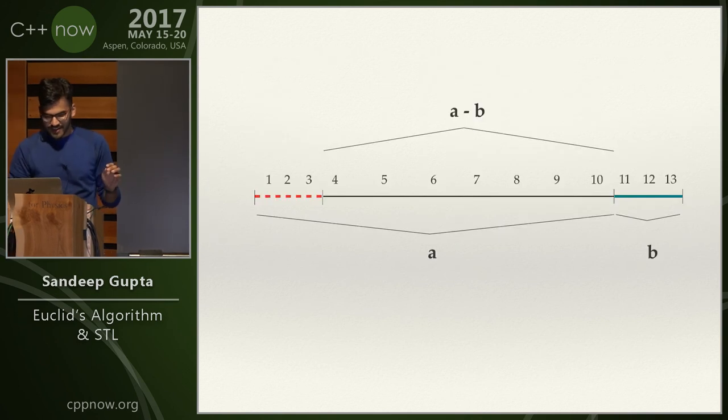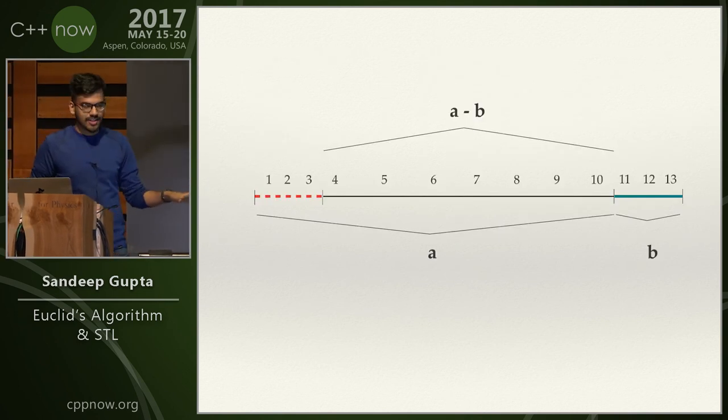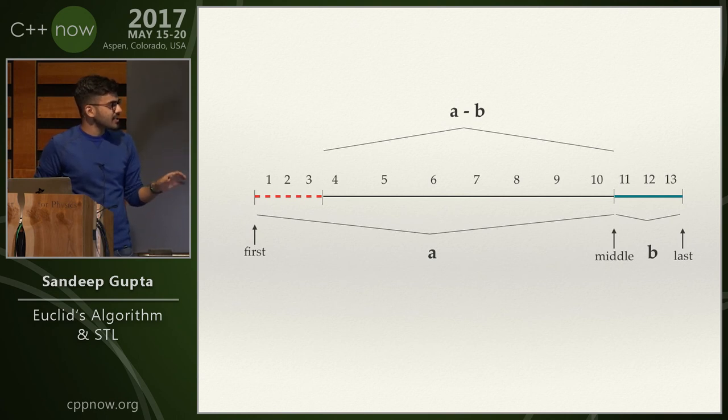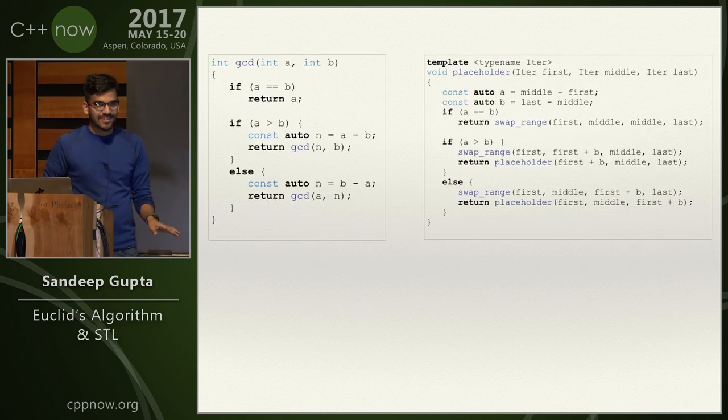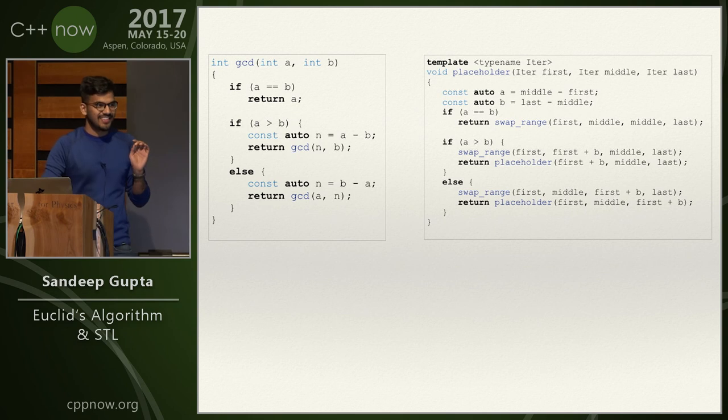So just to go back, this is our container. We have three iterators, and instead of subtracting them, we swap them and move the first ahead.